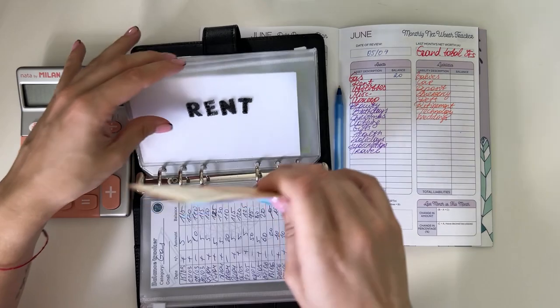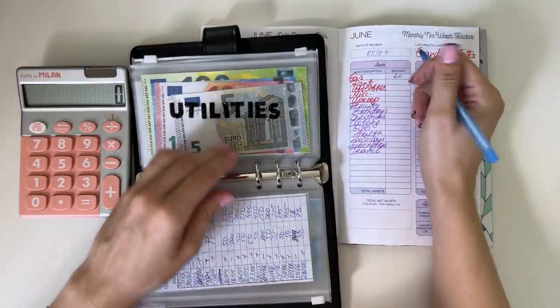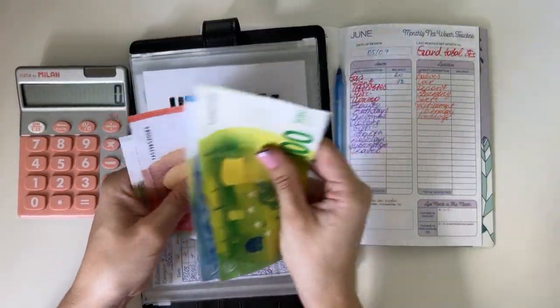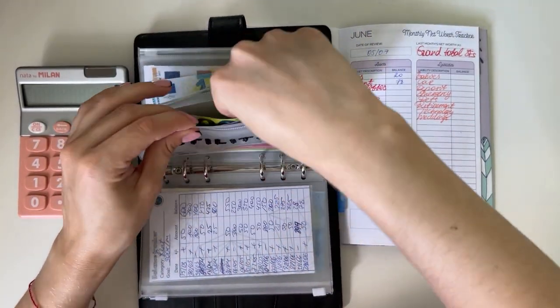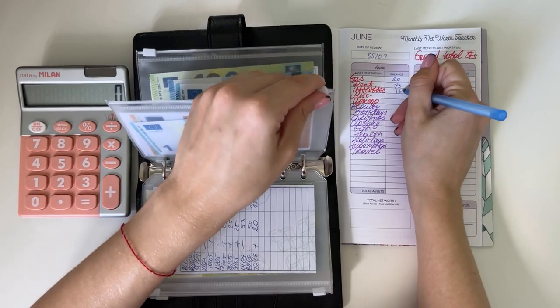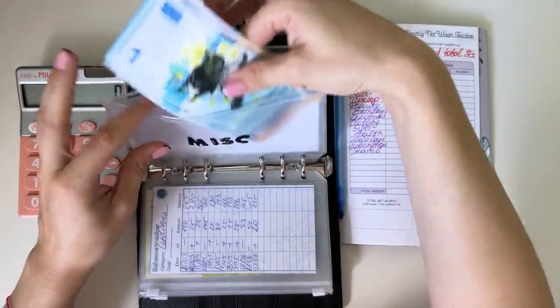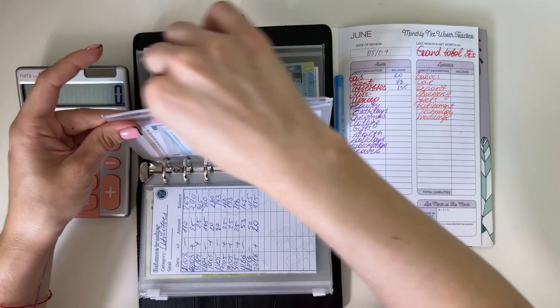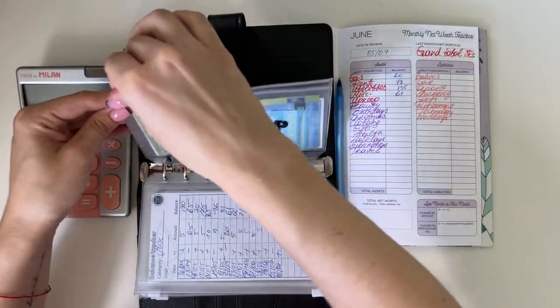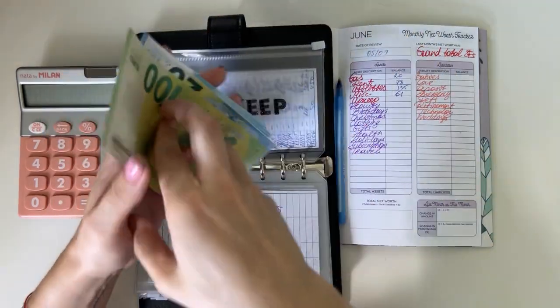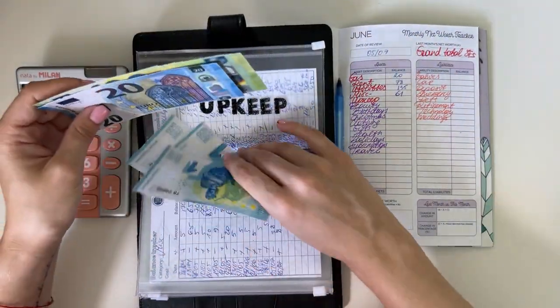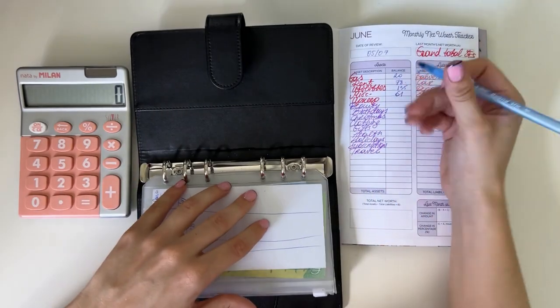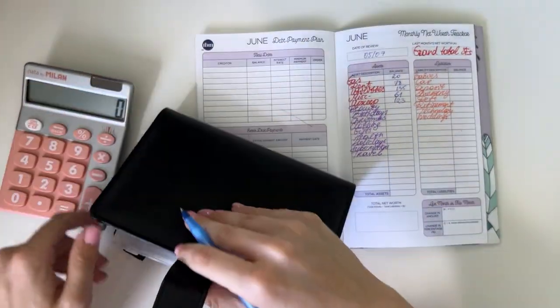Gas has a 20. Rent has 50, 75, 76, 77, 78. Utilities have 120, 135. Miscellaneous has 50, 55, 56, 57, 58, 59, 60, 61.